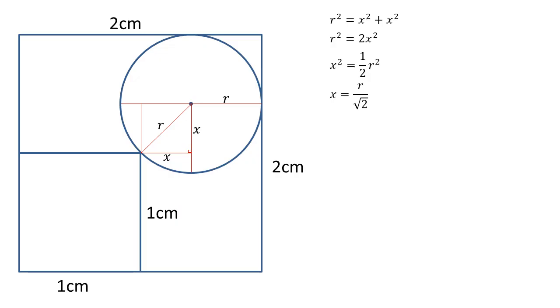That r and x must be the distance from the large square to the small square, which we know is 1 cm. So r + x = 1, but we know that x = r/√2.